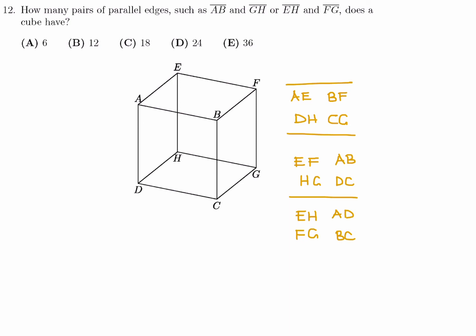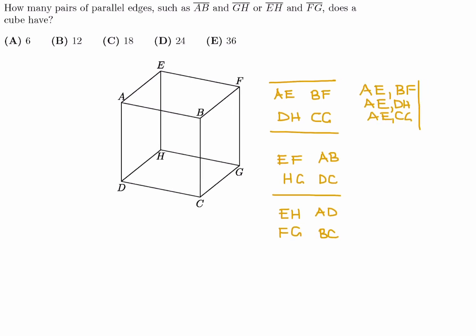For example, you can have AE plus BF, that's a pair. AE and DH, that's a pair. AE and CG, that's a pair. And then I can make more pairs. For example, DH and BF, DH and CG. And finally, the last pair, BF and CG.